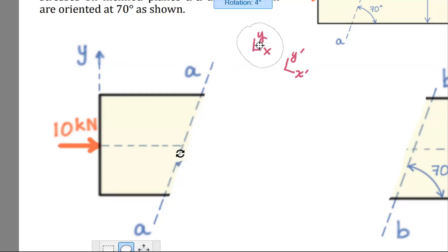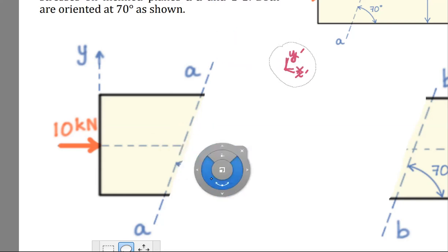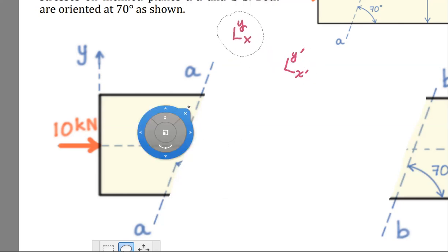And we would like to transform them to the X'Y' coordinate system. Really, all we're doing is rotating about Z, just like that, to go from our input XY to our output or destination or local X prime, Y prime.